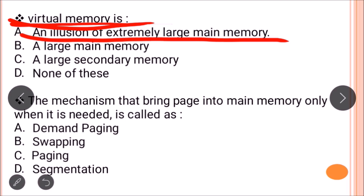Our main memory (RAM) is not large enough to load an entire process at once. So the pages of a process that are currently being executed are loaded into main memory. When other pages are needed, the CPU generates a request for them. Those pages reside on the hard disk and are loaded into main memory when required. The correct answer is option A: an illusion of extremely large main memory.